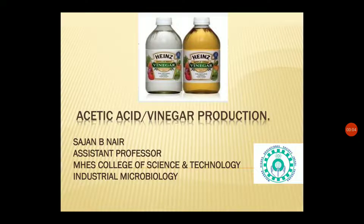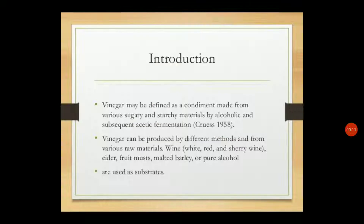Good afternoon students. We are going to discuss the topic of acetic acid or vinegar production. Vinegar is a condiment made from various sugary and starchy materials by alcoholic fermentation, followed by subsequent acetic acid fermentation. Vinegar can be produced from different raw materials like wine, cider, fruits, malted barley, or pure alcohol.